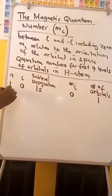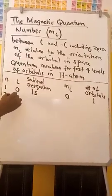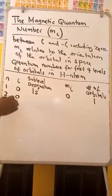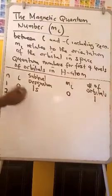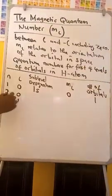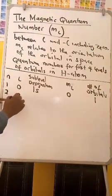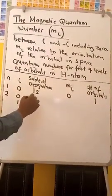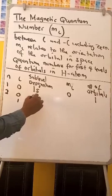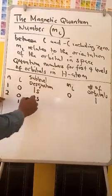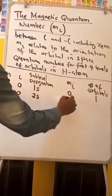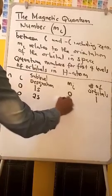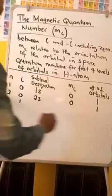When N is equal to 2, L has values 0 and 1, since L runs from 0 to N minus 1. When L is equal to 0, this is 2S. ML is 0. Number of orbitals: 1.